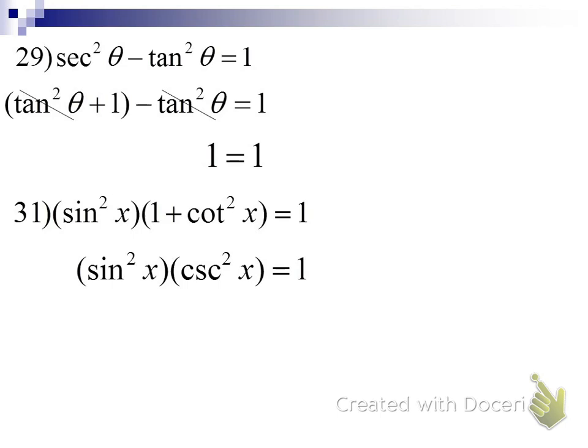Does that help us? Why does that help us? Sine and cosecant are reciprocals of one another. Cosecant squared is one over sine squared. The sine squareds cancel and we're left with one equals one.